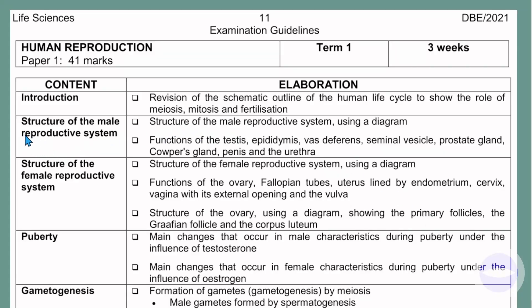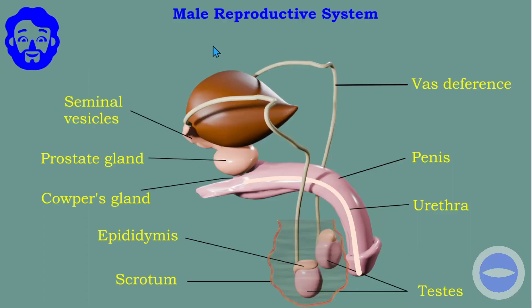Another thing the examiner wants us to know is the structure of the male reproductive system. We must know the structure using a diagram and the functions of the testis, epididymis, vas deferens, seminal vesicle, prostate gland, Cowper's gland, penis, and urethra — about nine organs in total. We must be able to label these parts and give the function of each.